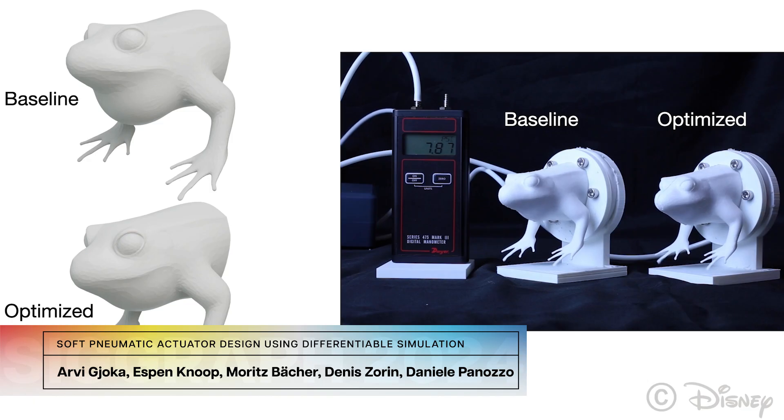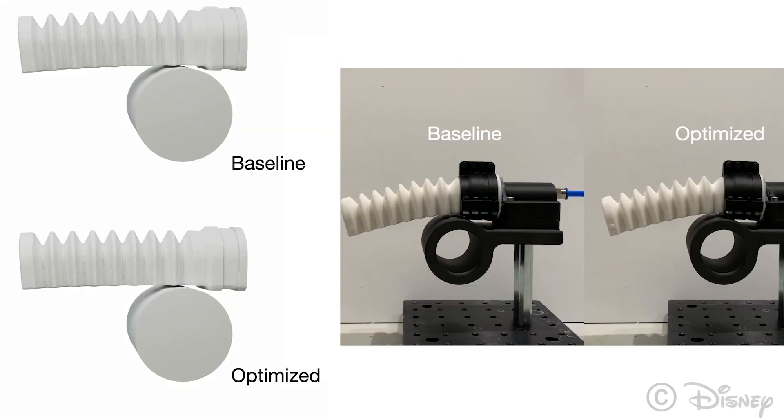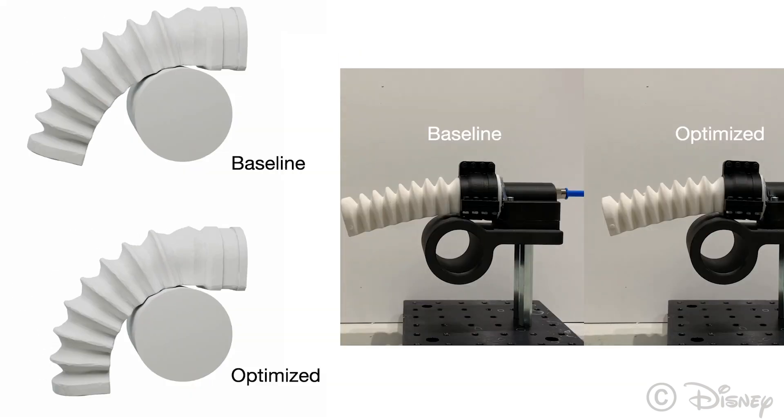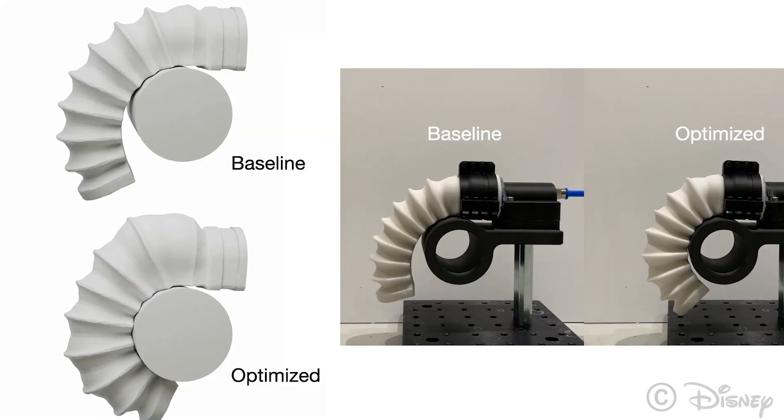This computational design pipeline for pneumatically actuated soft robots optimizes their shape to help achieve target objectives like gripping.